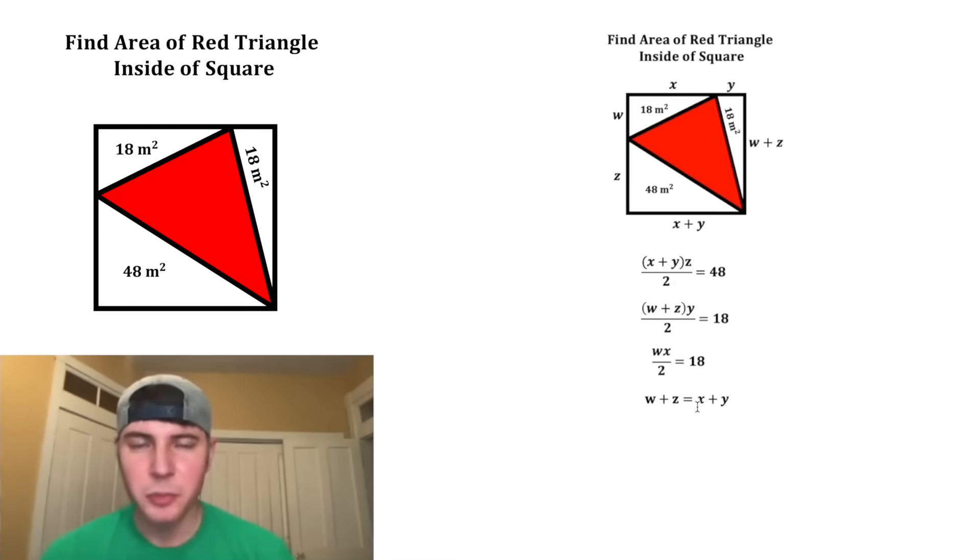Right now, we have four equations with four variables. We are able to solve this. All these top ones have this annoying 2 in the denominator. We can get rid of that by multiplying both sides of all the equations by 2. The denominators just go away, and on the right-hand side, we'll just double all these numbers.